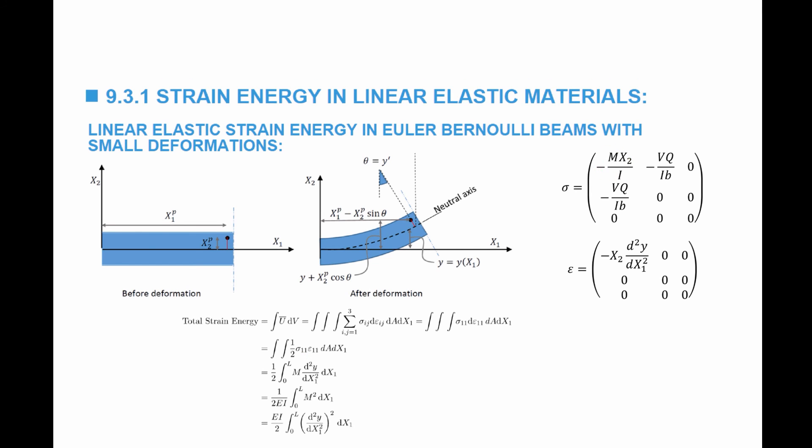Substituting the expressions for σ₁₁ and ε₁₁, the total energy in a beam can be calculated using one of three equivalent equations. The first is half the integral from 0 to L of M multiplied by the second derivative of y with respect to x₁ squared, integrated over the length. Replacing M with EI times the second derivative, we reach the compact form: (1/2EI) times the integral of M² dx₁. In the lecture, we'll go through examples with different boundary conditions to see their effect on the total energy stored in a beam.